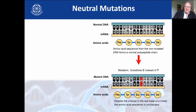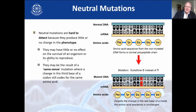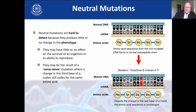Neutral mutations frequently occur because of what we talked about — the redundant nature of the genetic code. For instance, if we have CTT and a mutation occurred so the DNA became CTG, your mRNA is going to be GAG instead of GAA. But because of redundancy, if you look at the genetic code, both GAA and GAG code for glutamate. Consequently, this is a silent mutation — it has no effect whatsoever.